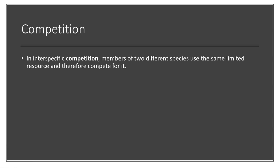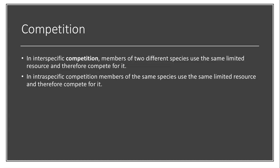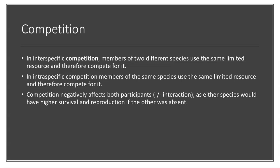The first type is competition. In interspecific competition, we're talking about competition between members of two different species that use the same limited resource and therefore compete for it. In intraspecific competition, members of the same species use the same limited resource and compete for it. Those resources can be mates, food, water, or shelter — anything necessary to survive. Depending on whether we're looking at the same or different species, we're talking about intraspecific or interspecific competition.